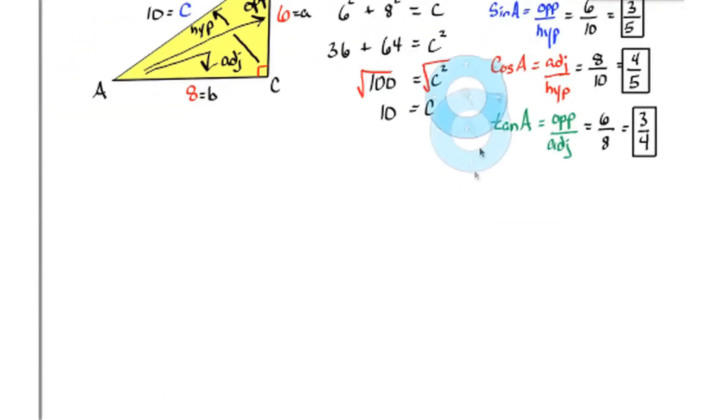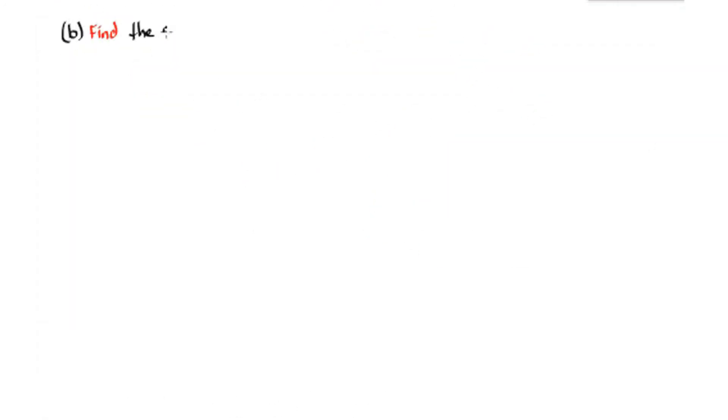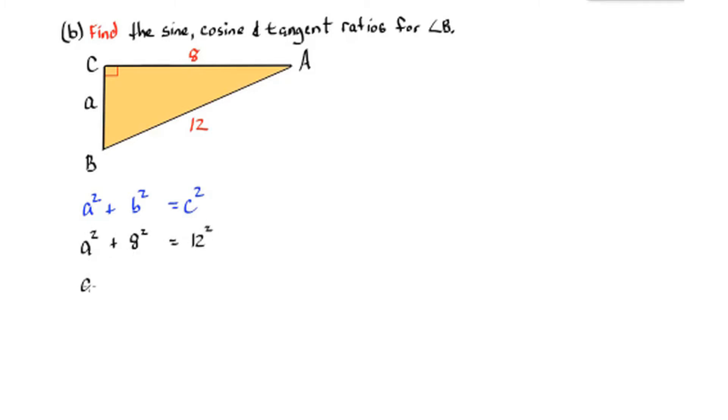Part B. Find the sine, cosine, and tangent ratios for angle B. So we have another right triangle. And we're given a leg of 8 and the hypotenuse of 12. So we have to find the leg A by using the Pythagorean theorem and solving for A. We need to simplify the radical and we get 4 root 5. So our leg is 4 root 5.